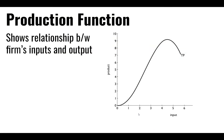We start with the production function, which shows us the relationship between the inputs we put in and the output we get. As I put in more workers, how much can each of those workers add to the total amount? Generally speaking, total product increases, though it starts to increase at a decreasing rate, and there may be a time at which we have too many inputs and total product begins to fall.